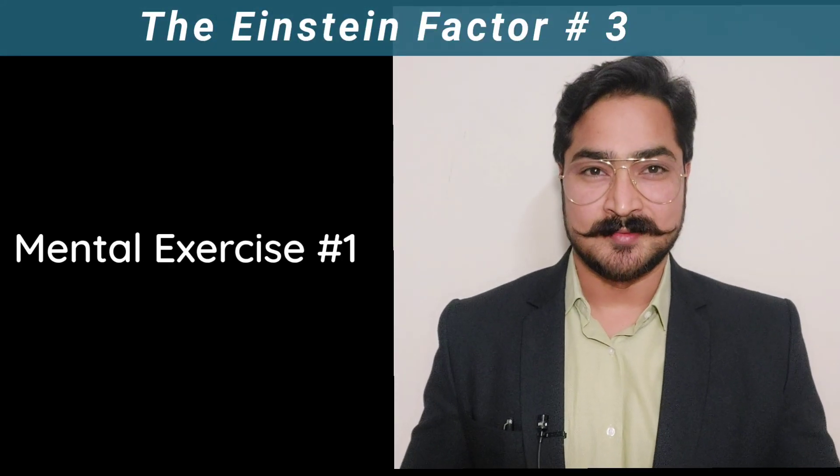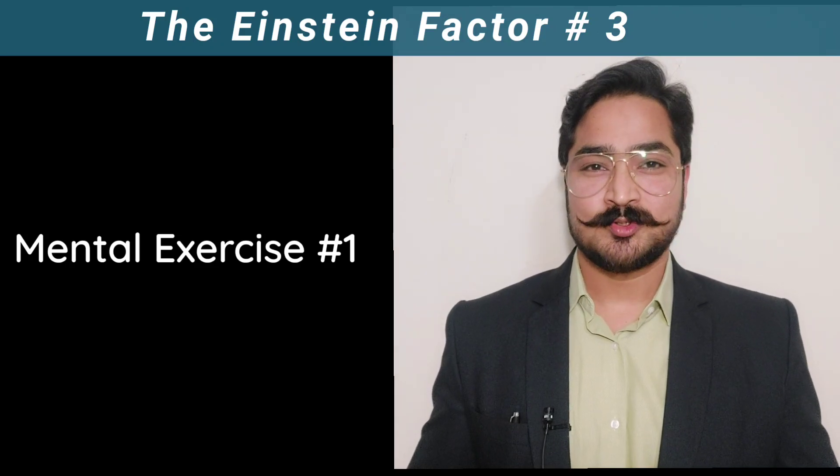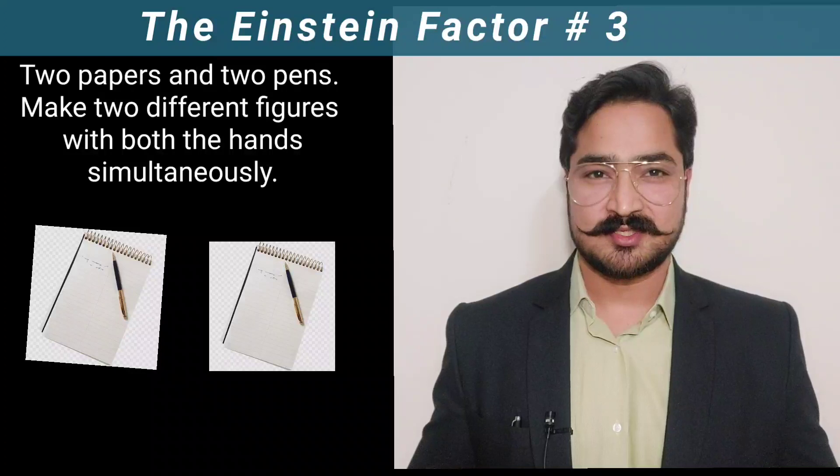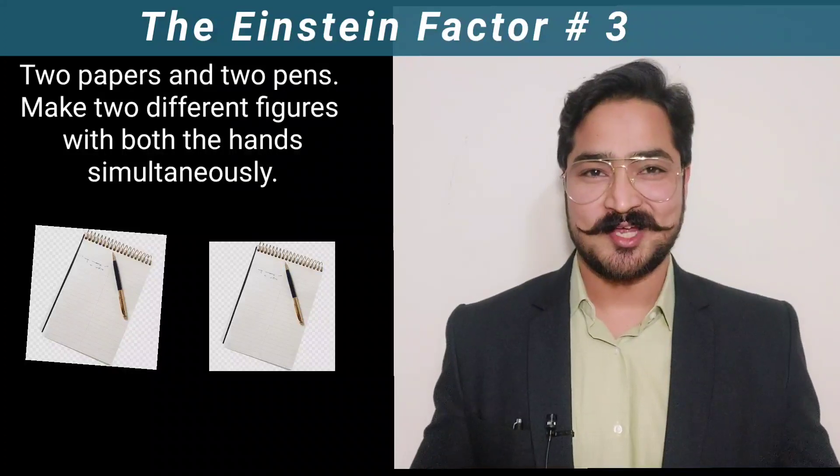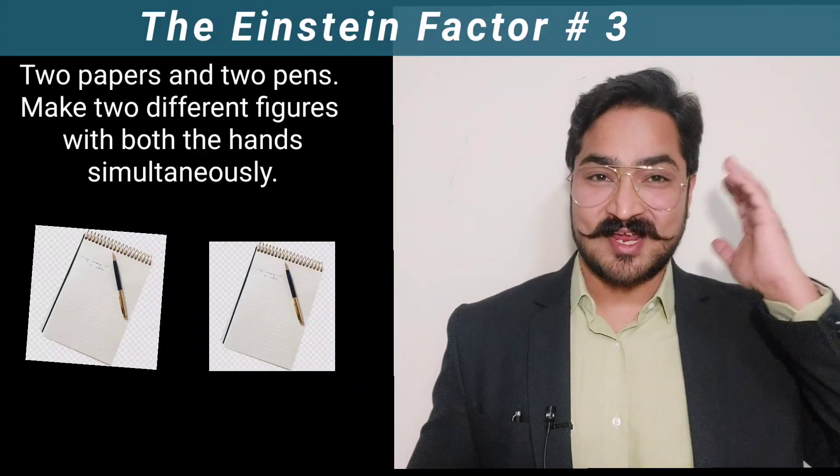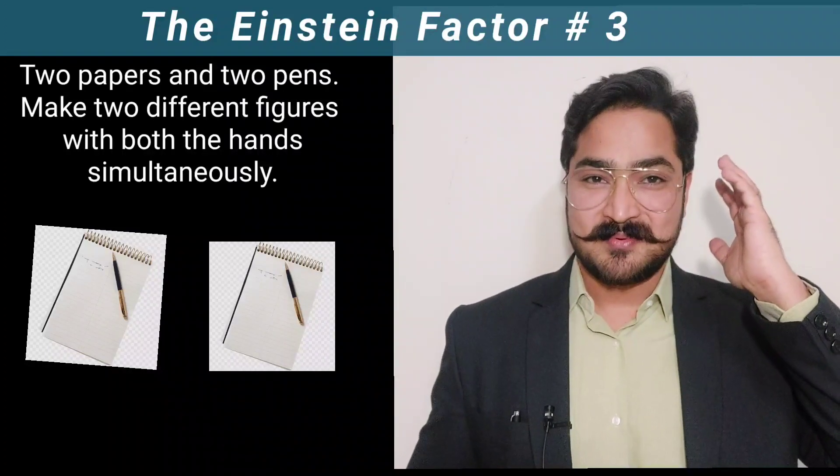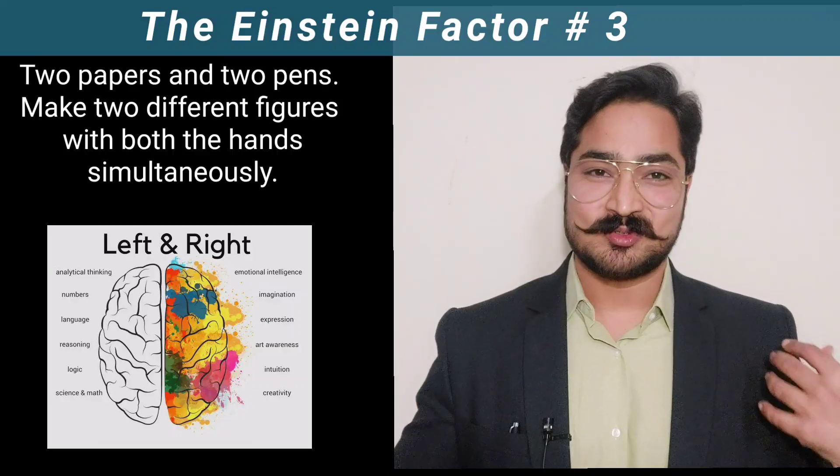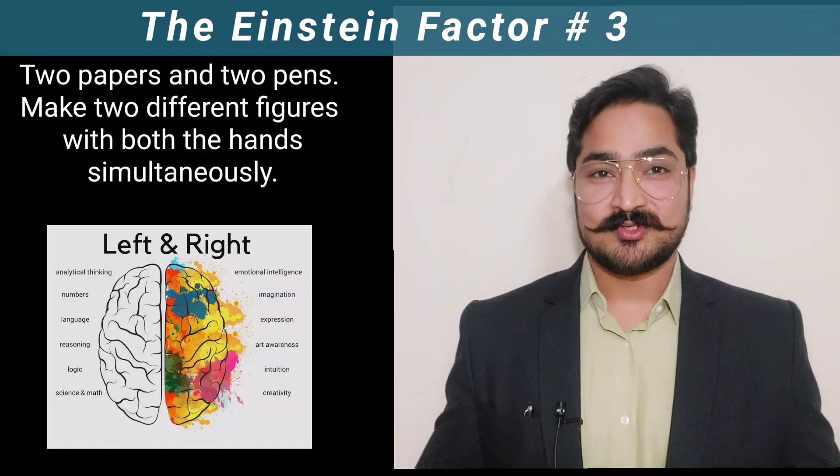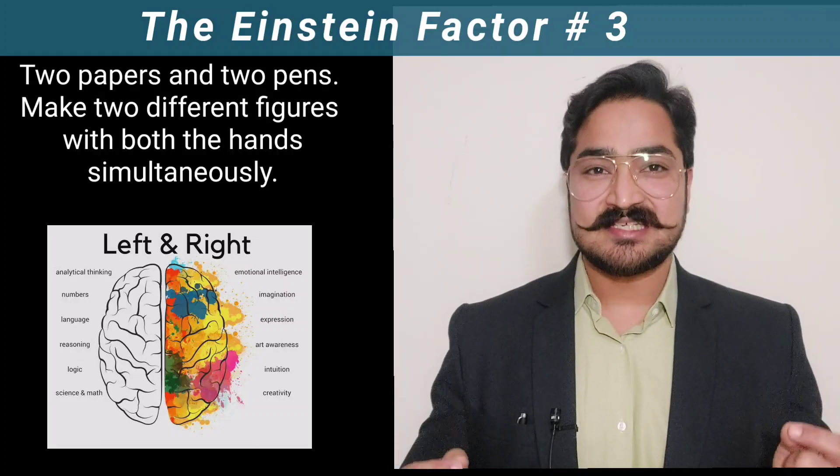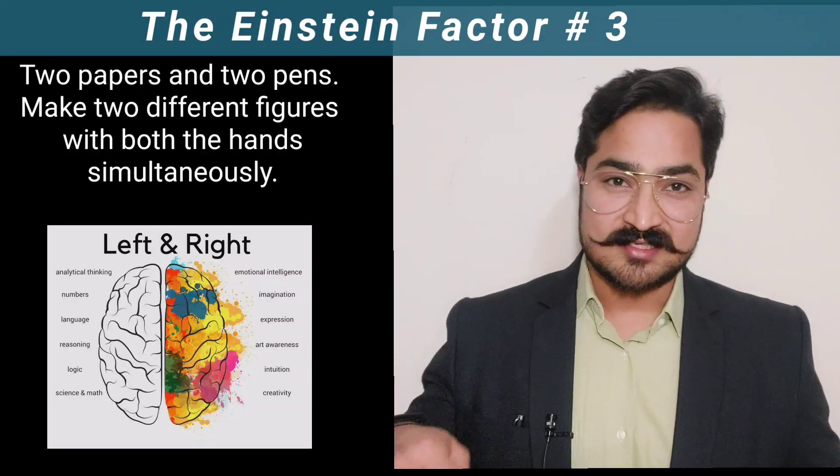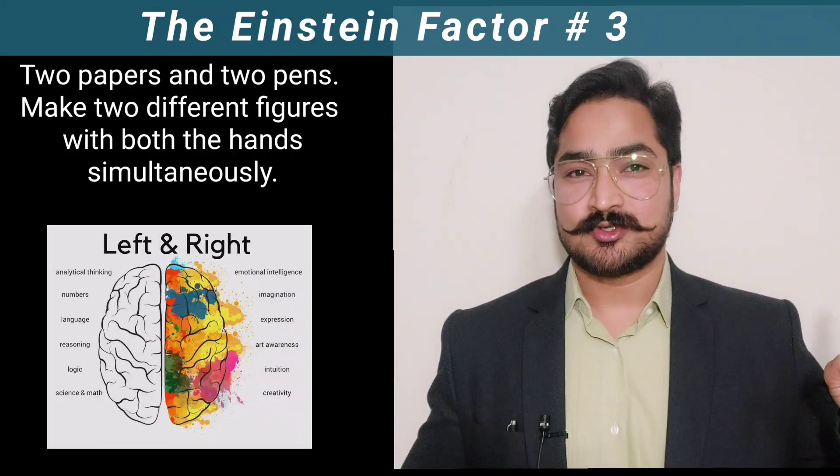Exercise number one: I want you to bring two papers and two pens. The question arises - when you can only write with one hand, why two pens? Well, it's because the right hemisphere of your brain controls the left side and the left side of the brain controls the right side of the body. That's why we want to use both hands simultaneously on the piece of paper. For example, with the left hand you can draw a circle and with the right hand draw a triangle.